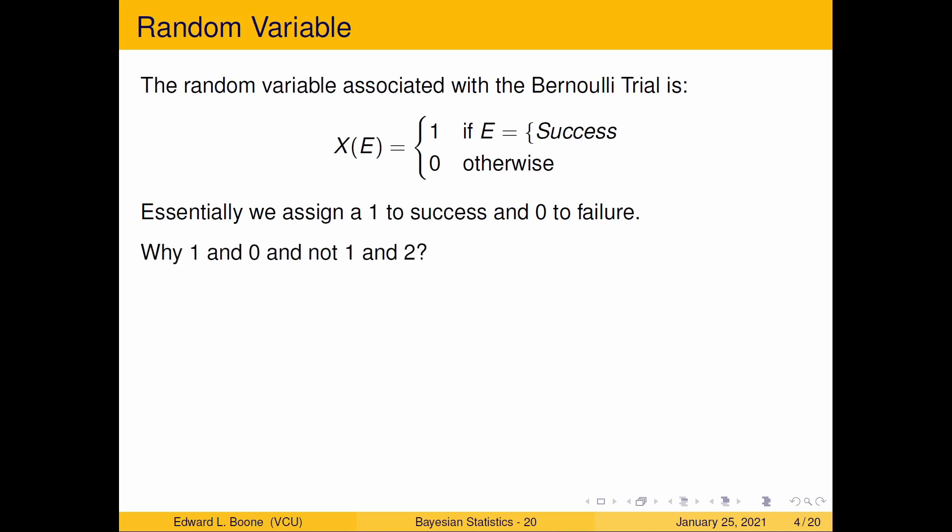Now the question is why one and zero and not one and two? Well it turns out that if you go with one and zero life is easier. Also mathematicians love zero and one, that's their favorite set of numbers. They'll tell you they like some crazy number like e or pi or some weird transcendental number, but in reality they like zero and one. They just won't admit it.